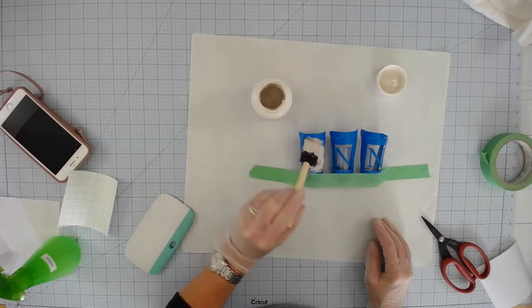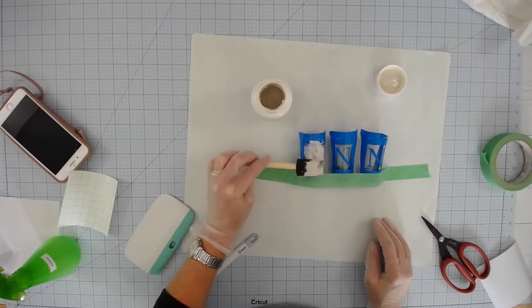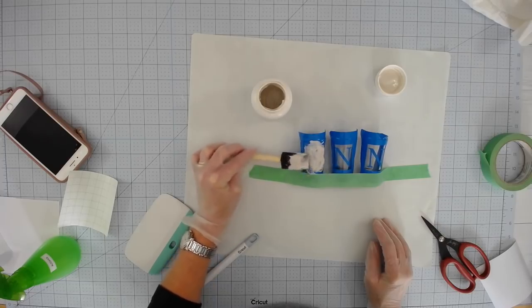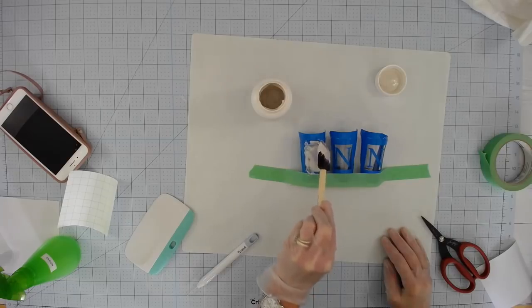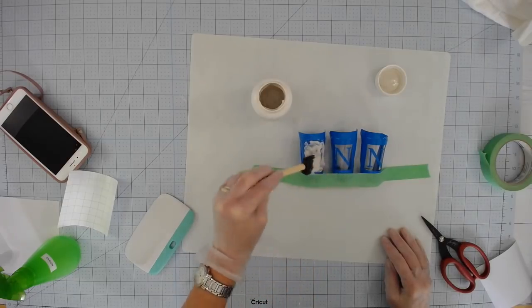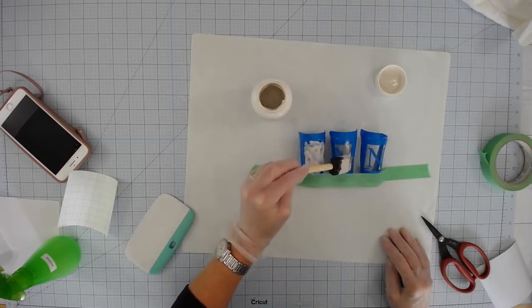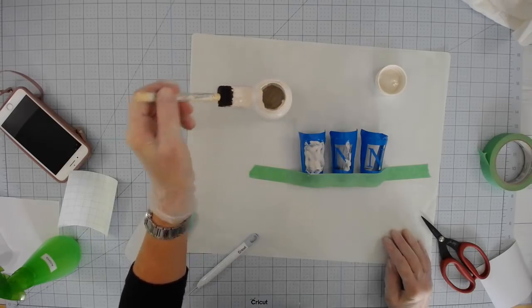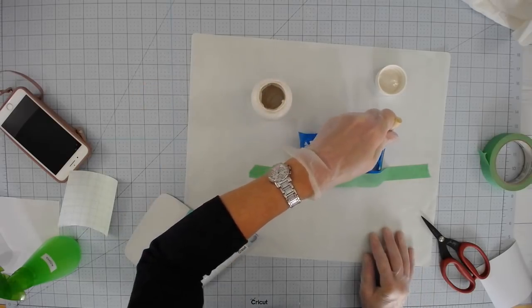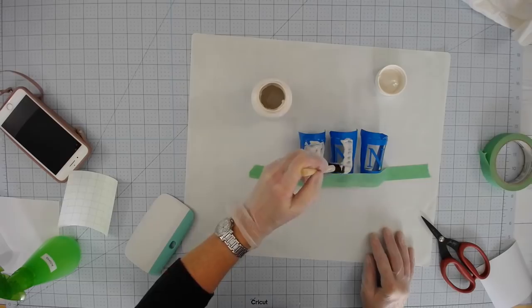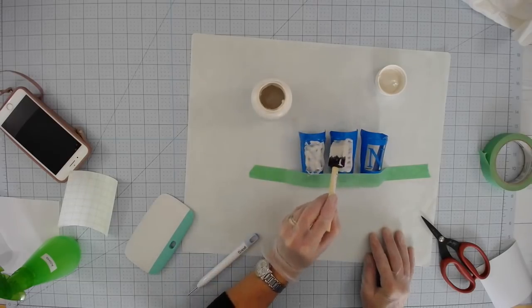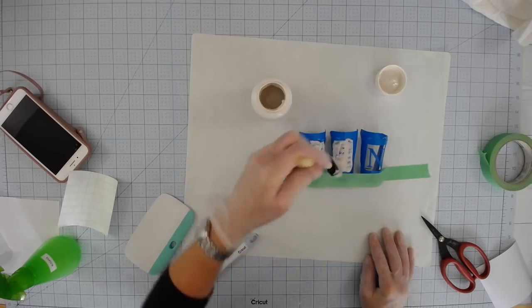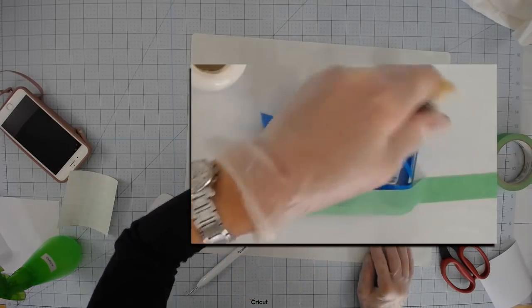So you're just going to dab that on. I'm using a foam brush. You can use a paintbrush, but you want to dab that on, and I'm pretty generous with it. Some people put it on a little bit lighter, but I make sure that there's no glass showing through. I also want to make sure that I don't have so much on there that it's going to drip down the side of the glass and onto the part that's not covered. So you just want a generous amount. Make sure that it's covered. I'm dabbing it on and making sure that the entire design is covered.